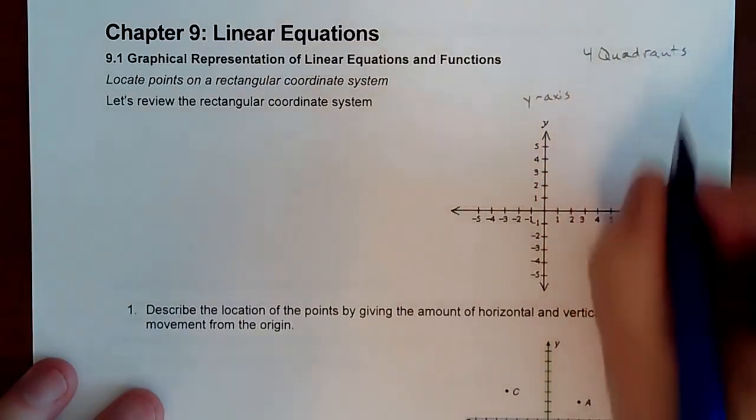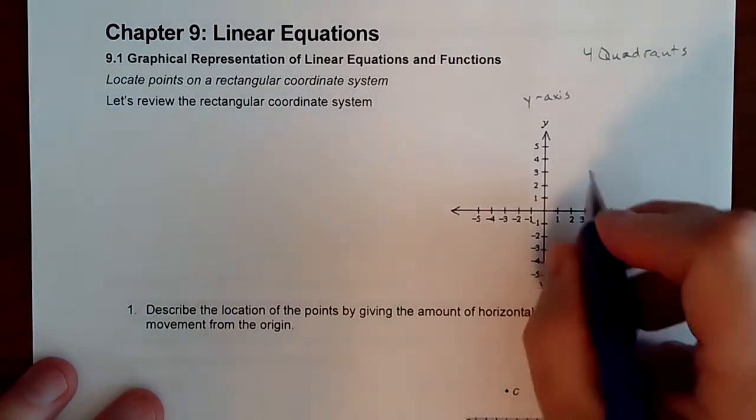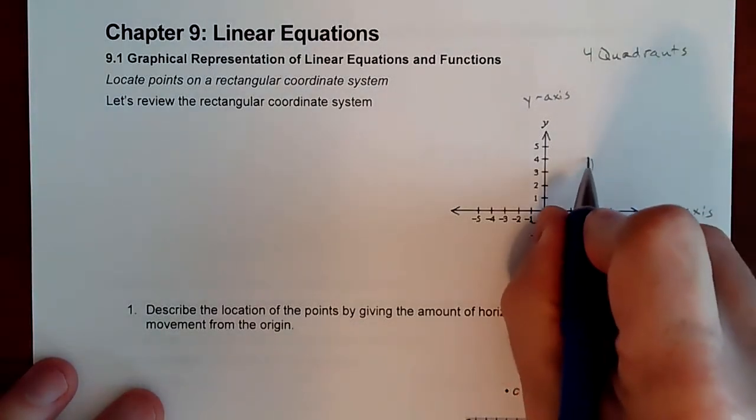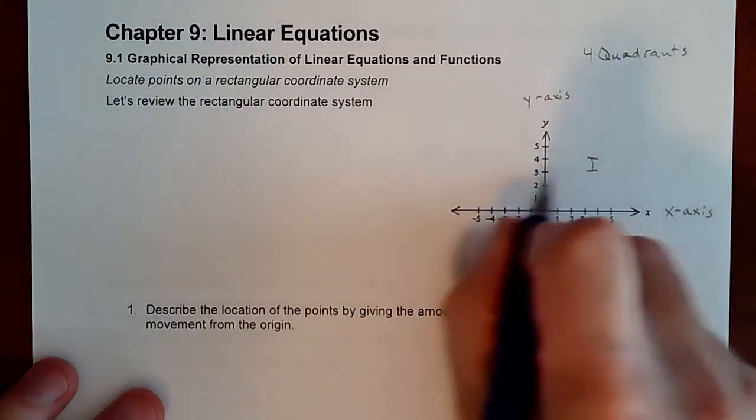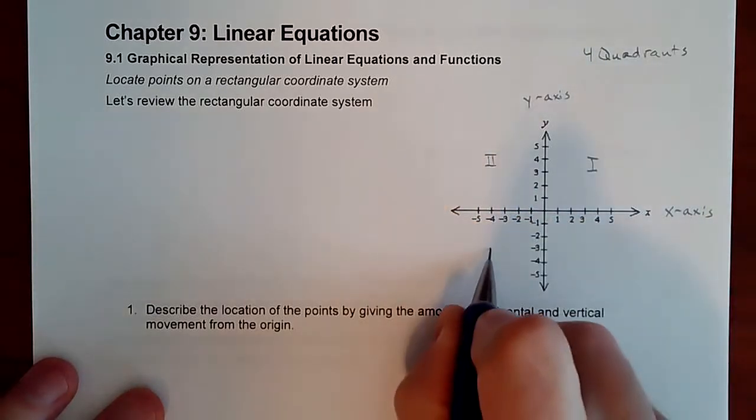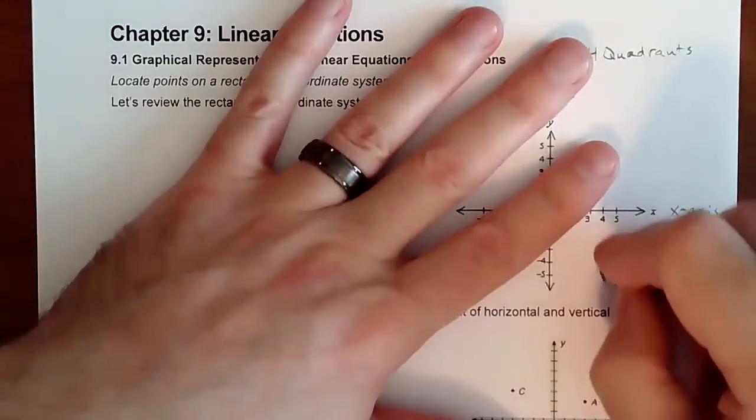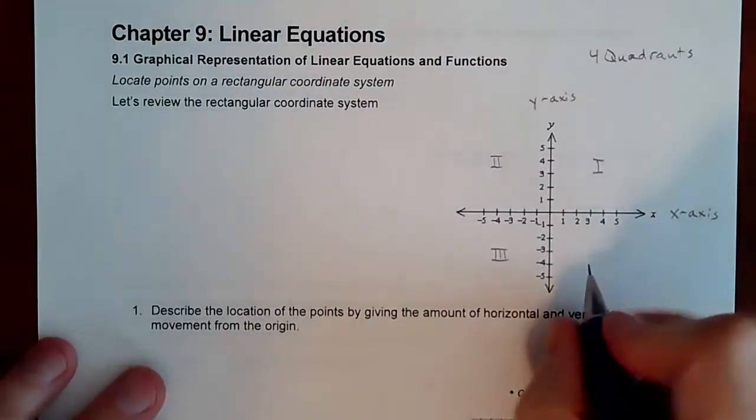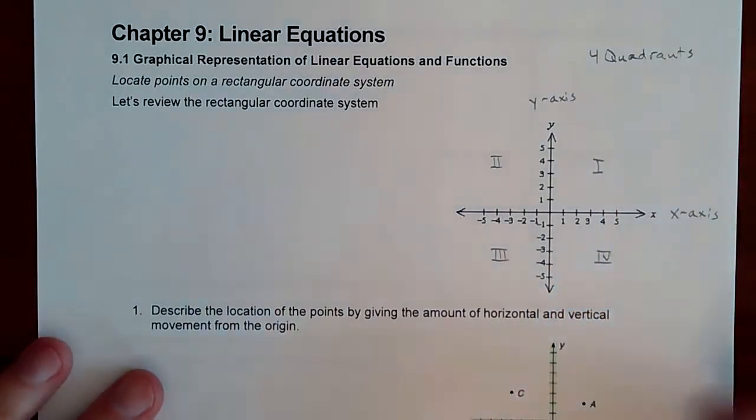We have four quadrants, and here's how you number them. We start in the upper right, and this is quadrant one. We use Roman numerals to number these quadrants. This is quadrant one, this is quadrant two, this is quadrant three, and this is quadrant four. It always starts in the upper right and goes in a counterclockwise fashion.